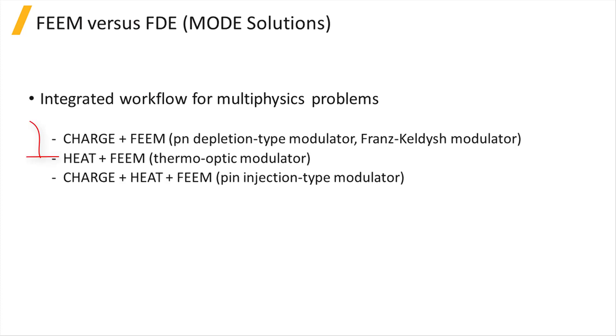For example, you can use the charge solver to calculate the charge variation of a depletion type PN phase shifter and model its optical properties in FIM, or you can use heat and FIM together to model a thermo-optic modulator. You can even perform a coupled electrothermal simulation using charge and heat for an injection type electro-optic modulator, where both charge variation and joule heating play a role in the optical performance, and then get the optical modeling done with FIM, all inside device.